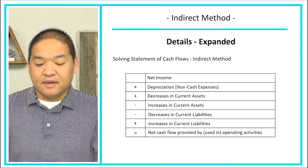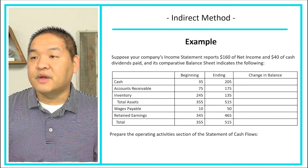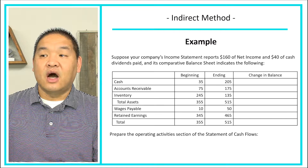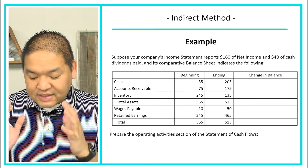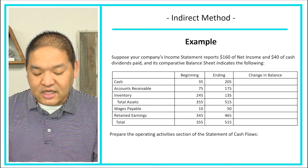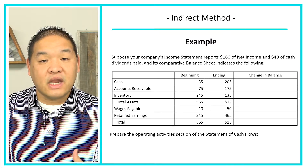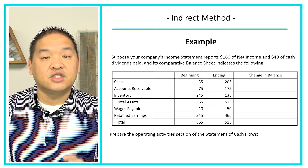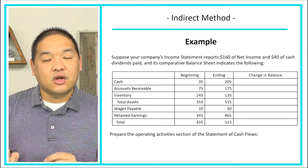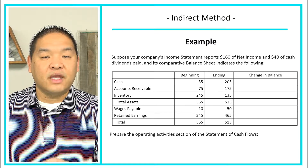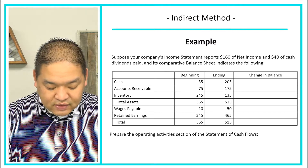Let's look at an example. Suppose your company's income statement reports $160 of net income and $40 of cash dividends paid. The comparative balance sheet provides additional data, and we need to prepare the operating activity section of the statement of cash flows. The first thing to do is go straight to the balance sheet and find all the changes in current assets and current liabilities. We skip cash itself since we only care about non-cash assets, so we go straight to accounts receivable.